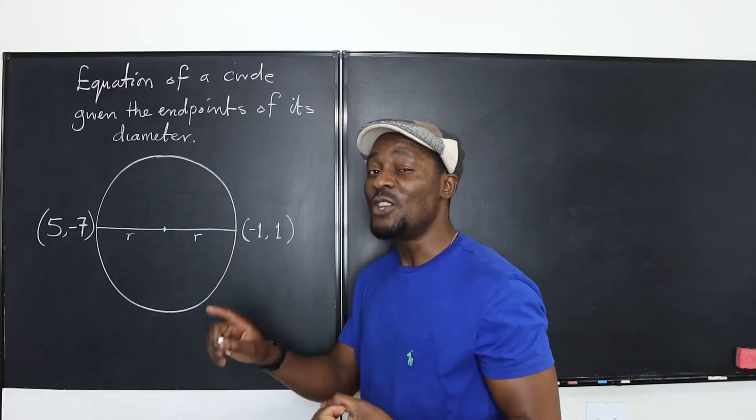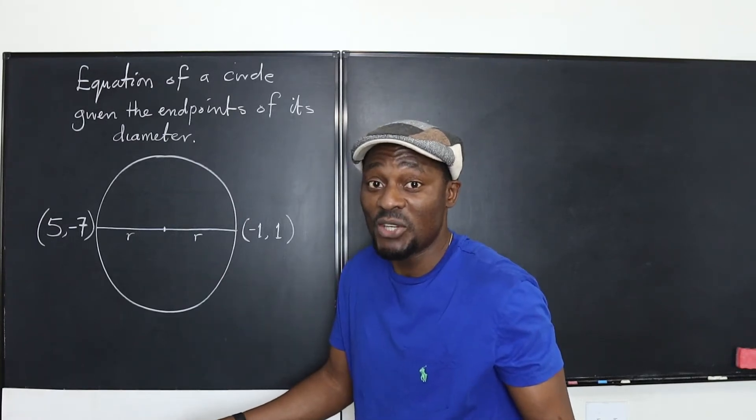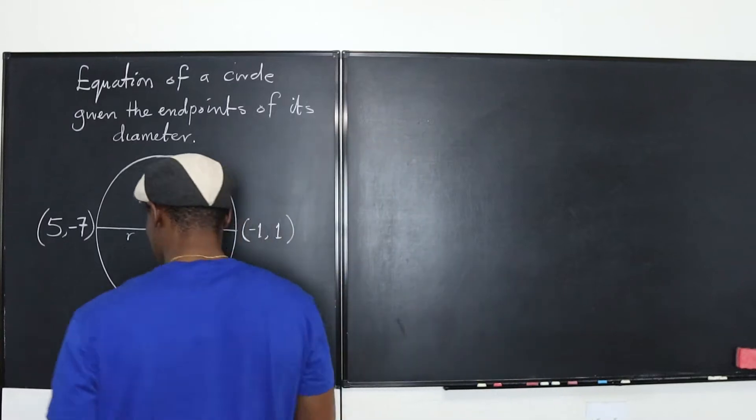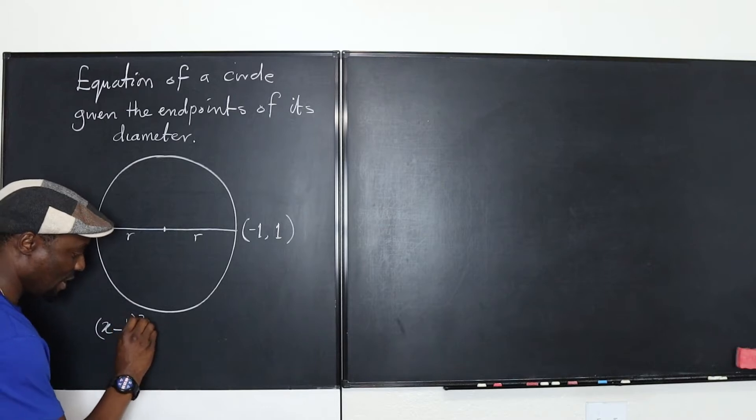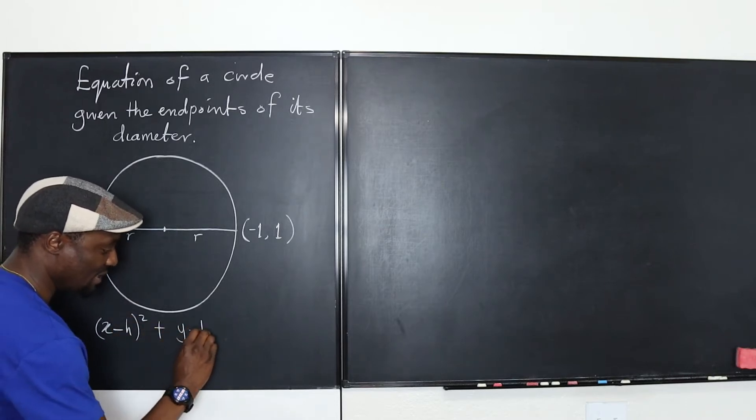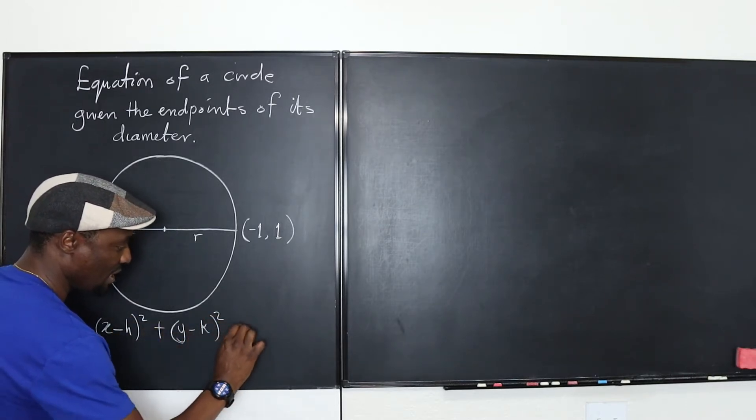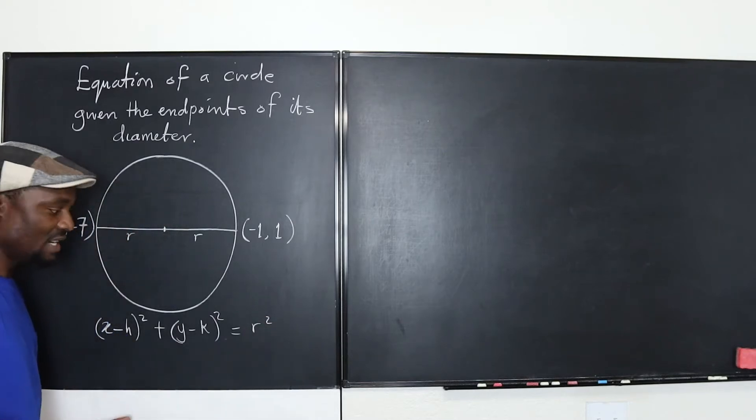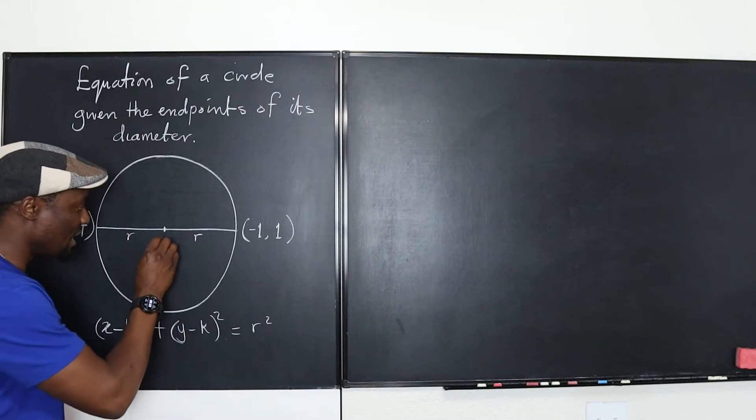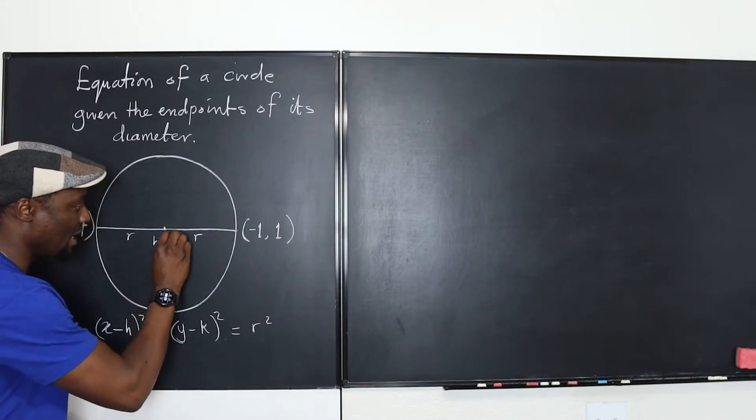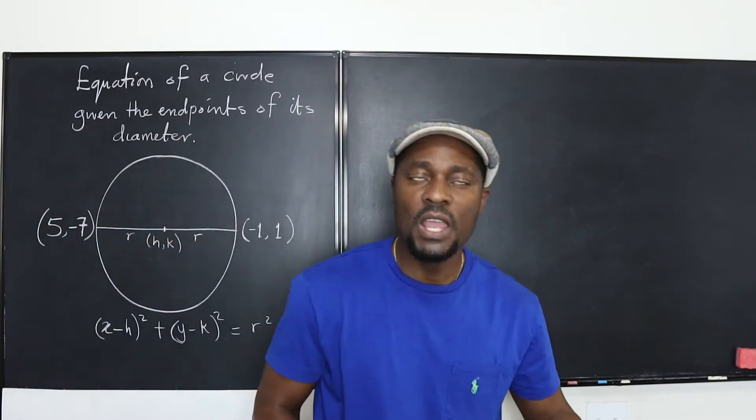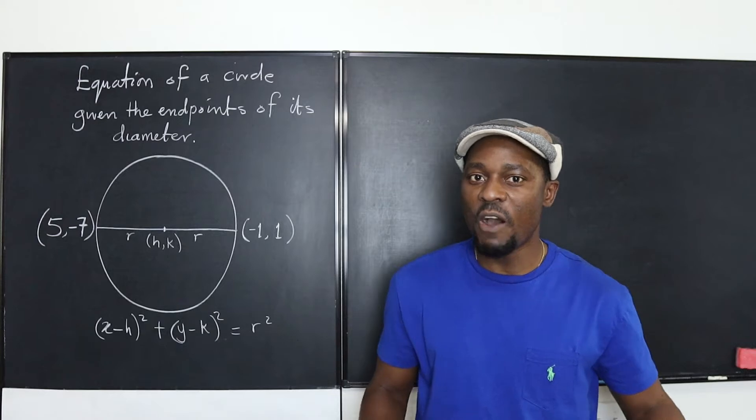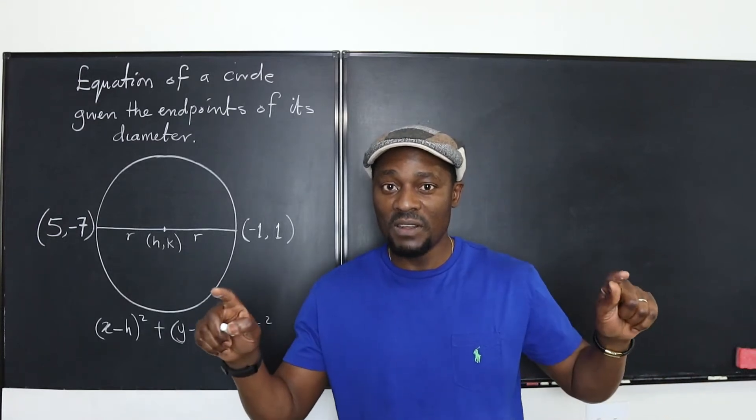Once you know the center and you know the radius, you already have the equation of the circle because the equation of all circles can be written as x minus h squared plus y minus k squared equals the square of the radius. That's how you find the equation. This is the standard equation of a circle. So we just need to find what this point is, h, k. We have this, we have this, but we want to know this. Well, from your geometry or from your algebra one, you know how to find the midpoint of a line segment.